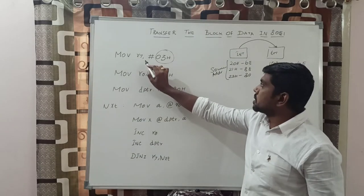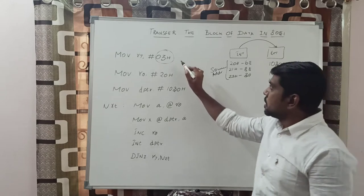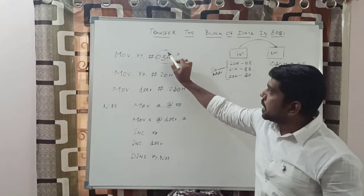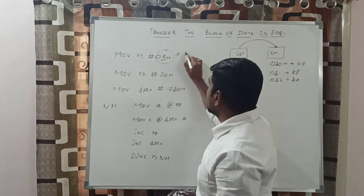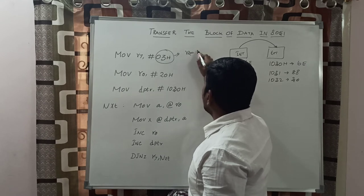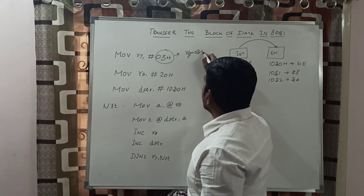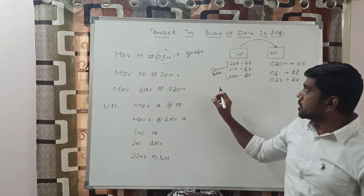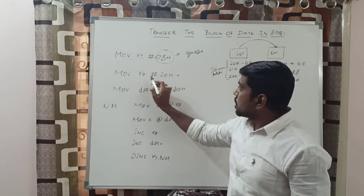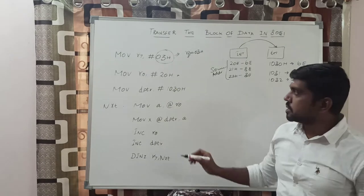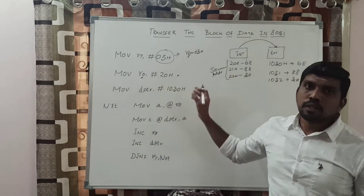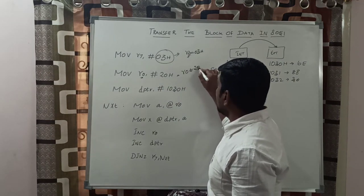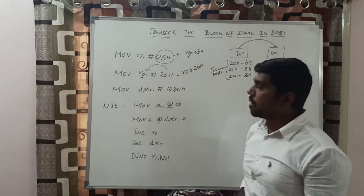The first instruction is MOV R7, #03h. This instruction says that in this program we are considering 3 data items. This immediate value is transferred to the R7 register. After execution of this instruction, R7 value is 03h. The next instruction declares the input address location: MOV R0, #20h. This R0 holds the source address location. After execution, R0 value is 20h.